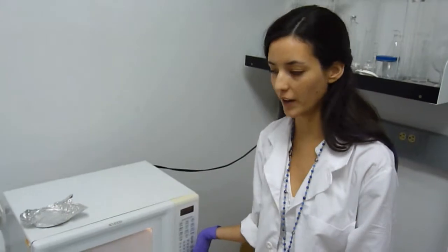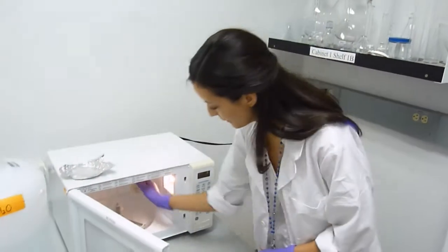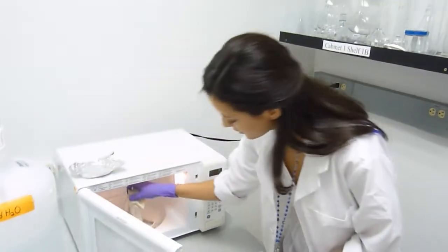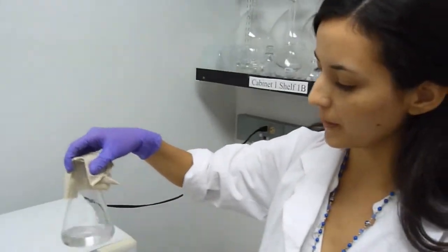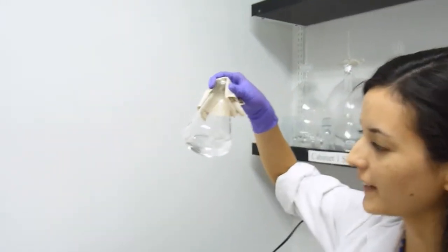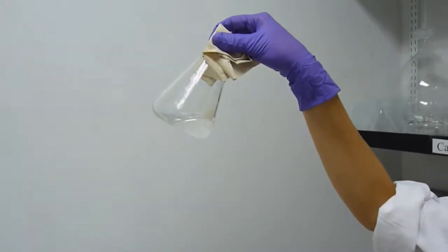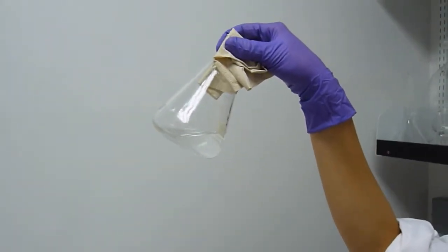After the first round of heating, we're going to check if our agarose has melted. We're going to take it, swirl it a little bit, and check if it's fully melted. I can still see some particles that have not fully dissolved, so I'm going to heat it for another 30 seconds.